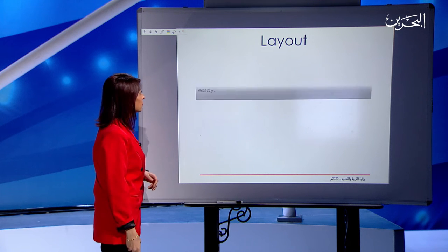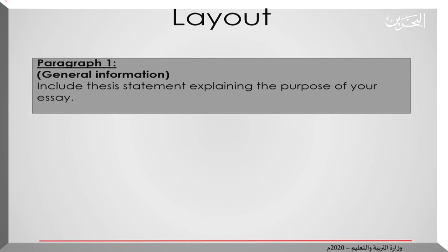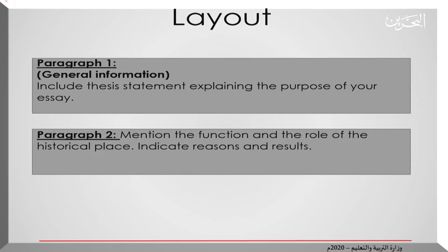Now let's move to the layout of writing an evaluation essay. In the first paragraph, include general information and a thesis statement explaining the purpose of your essay — for example, you're writing about a historical tourist attraction. In the second paragraph, mention the function and role of historical places in general, then be specific about the historical place you've chosen. This is where you use expressions like 'consequently,' 'so that,' and 'as a result' to indicate reasons and results.